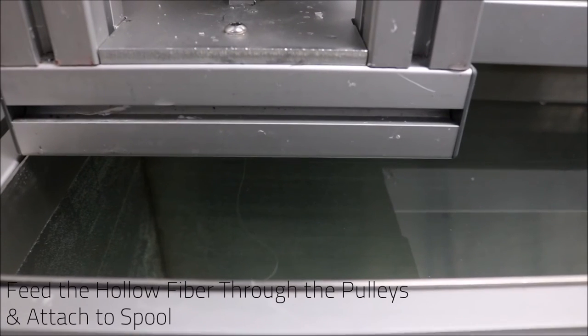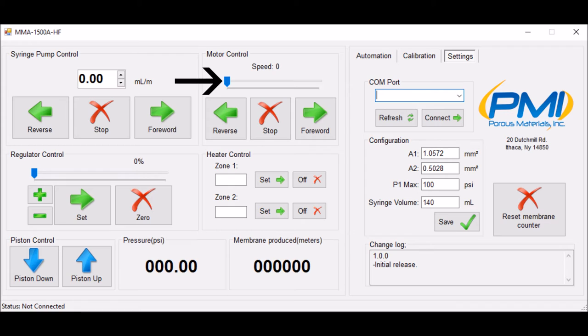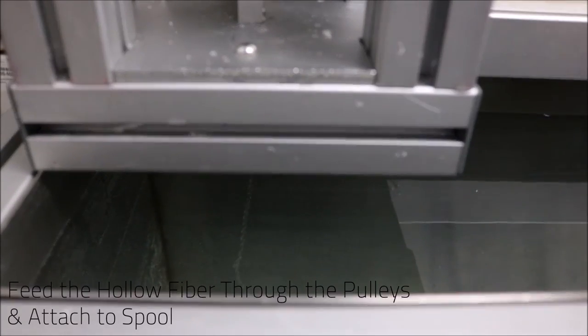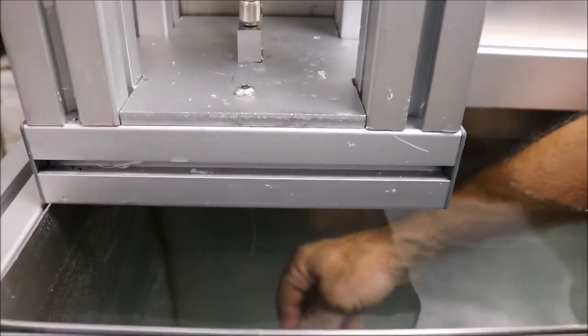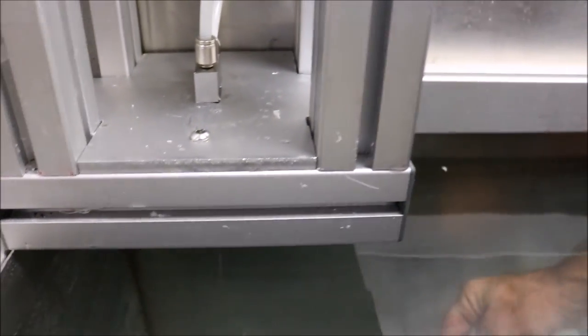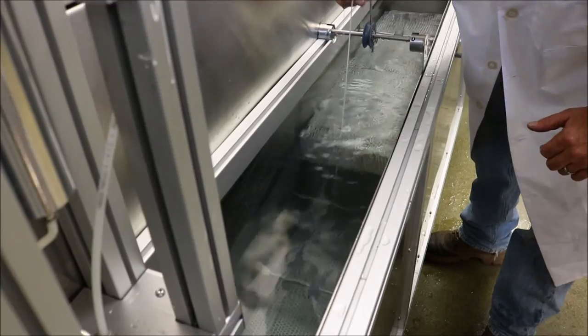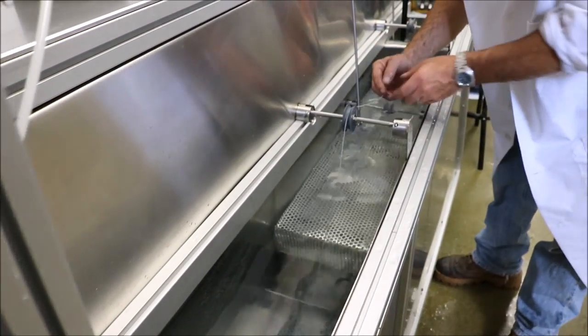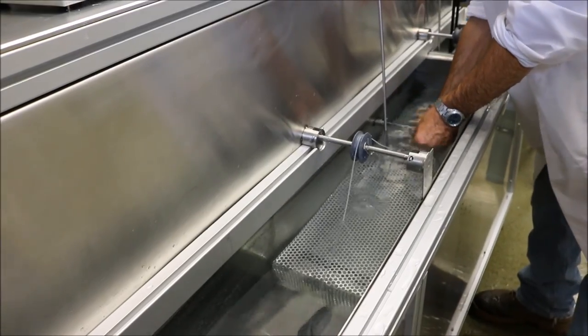After you begin to see the hollow fiber strand forming, initiate the motor for the spool using the motor control in the software. Next, we are going to carefully feed the hollow fiber strand up through the pulleys and connect it to the spool at the end. Be sure to allow enough slack to form so that the hollow fiber strand is easily manipulated up through the pulleys.